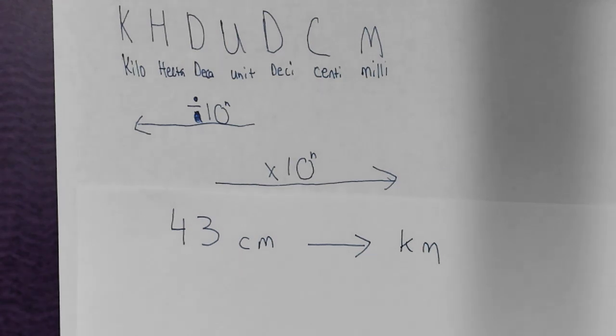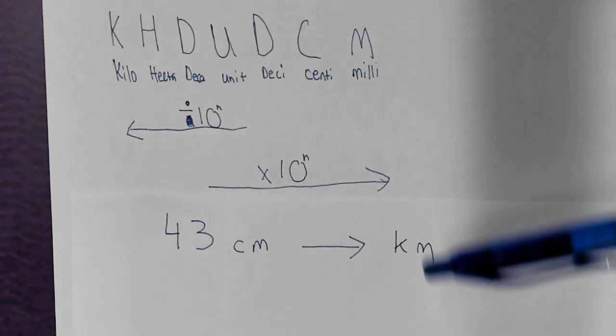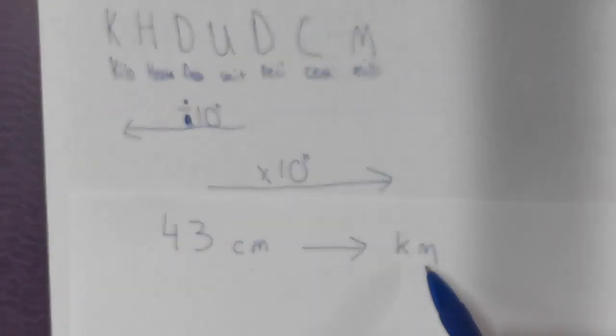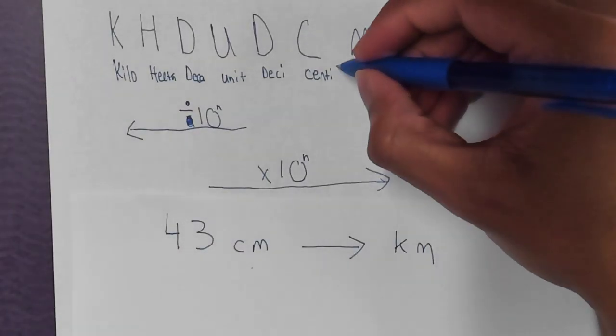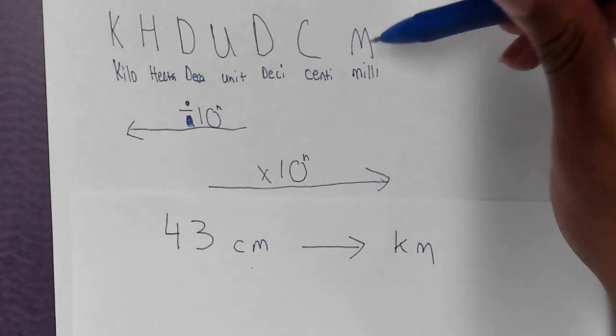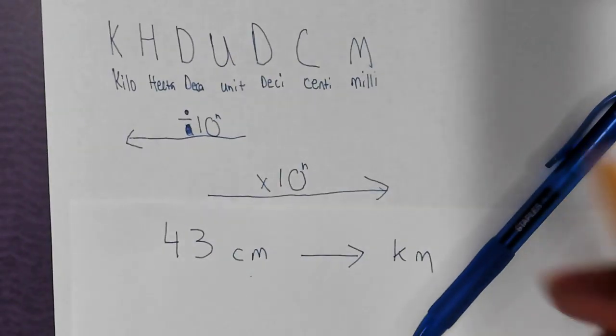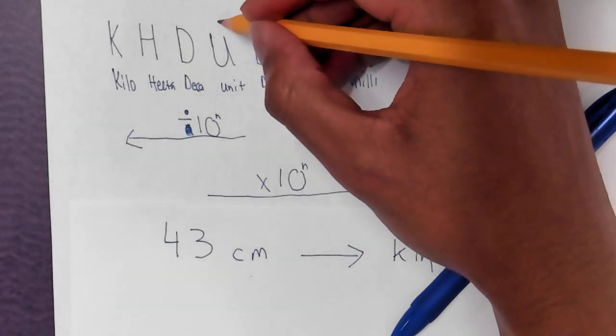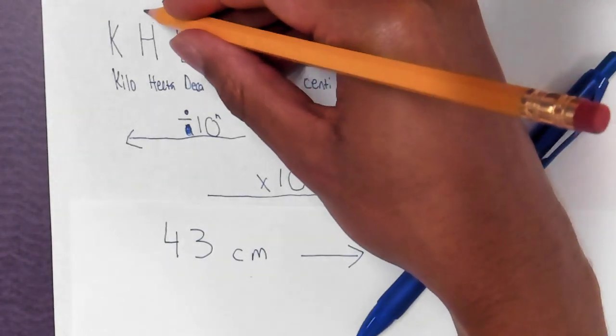In this case, this is pretty straightforward since we have the King Henry written out right in front of us. We're going from centimeters into kilometers. So here's the centi prefix, here's the kilo prefix. Let's count how many jumps. One, two, three, four, five.